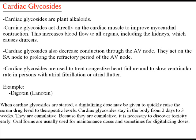Cardiac glycosides act directly on the cardiac muscle to improve myocardium contraction. This increases blood flow to all organs, including the kidneys, which causes diuresis. Cardiac glycosides also decrease conduction through the AV node and act on the SA node to prolong the refractory period of the AV node.